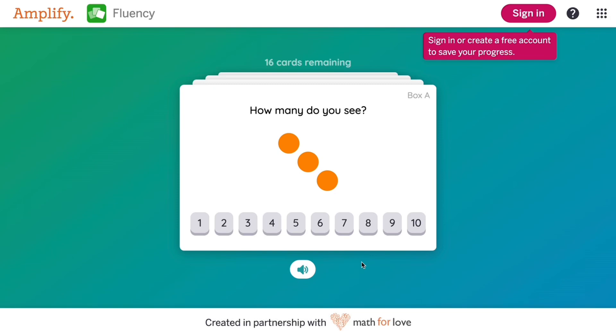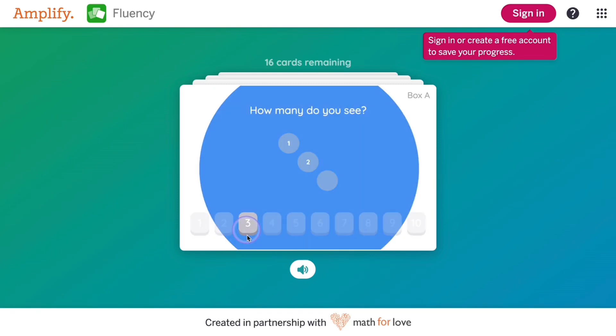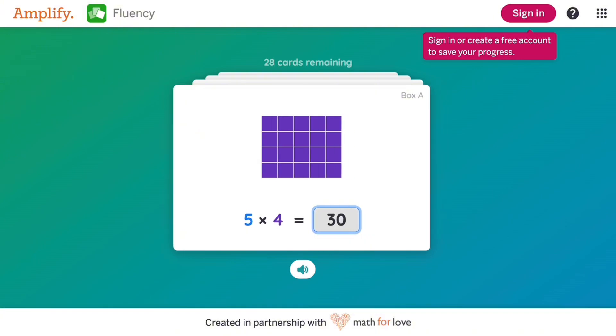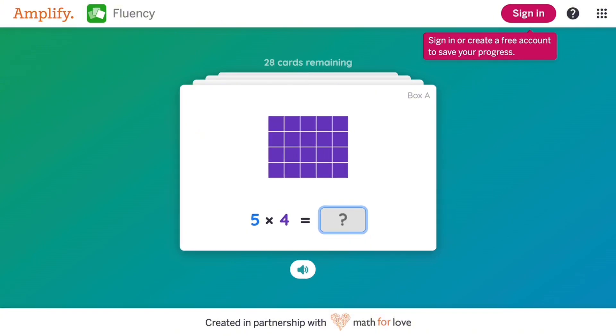When students answer a question correctly, there's a fun sound effect, and the card fills with a bright color. If the answer is incorrect, the card shakes, and students get a second attempt.